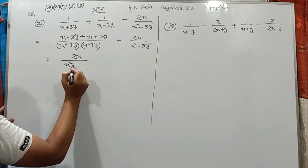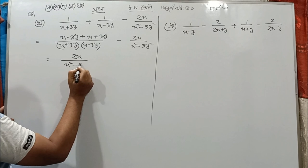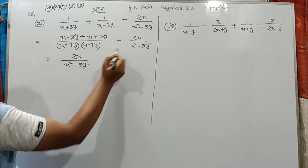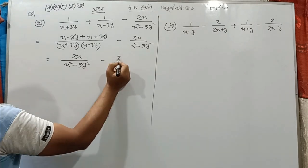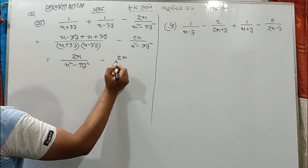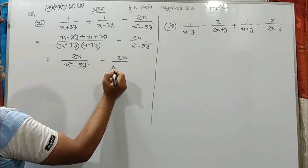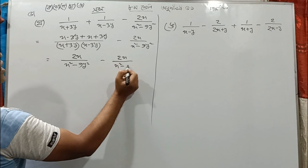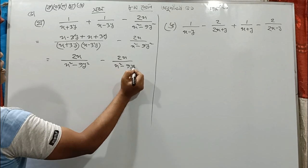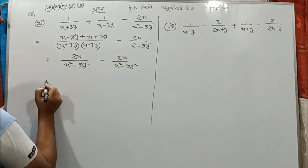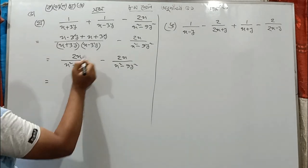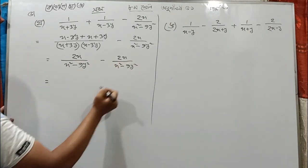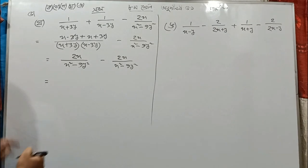So we have 3y square, 9y squared. So we have 2xy, x squared minus 9y squared. So in this case, cancels to 0.